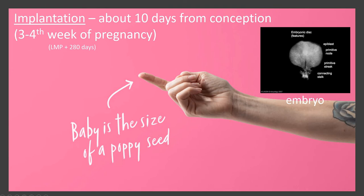Now the baby is about the size of a poppy seed — that little tiny dot right there, that is baby. This is what you looked like at this stage. Not much to look at, but you are connected by the connecting stalk. You have the blastocele around you. And this little tiny line called the primitive streak is what's going to end up becoming your nervous system. There is not a whole lot to see at that point.